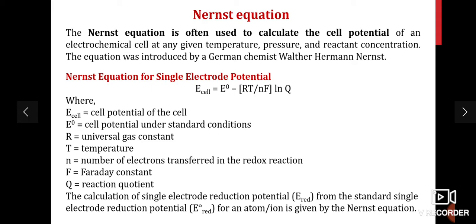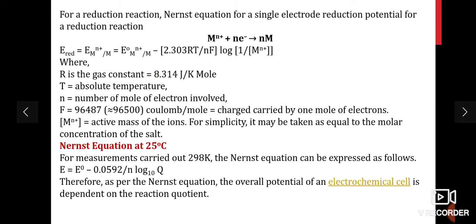The calculation of single electrode potential from the standard single electrode potential for an atom or ion is given by the Nernst equation for a redox reduction reaction. For the reaction M^(n+) + ne⁻ → M, the reduction potential is given by: E°(M^n+/M) = E° − (2.303 RT/nF) log(1/[M^n+]), where R is the gas constant, n is the number of electrons, T is the absolute temperature, and F is Faraday's constant, 96500 coulombs.